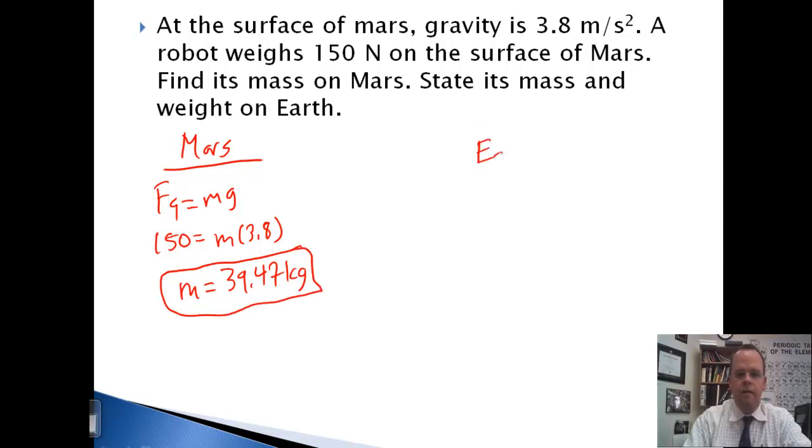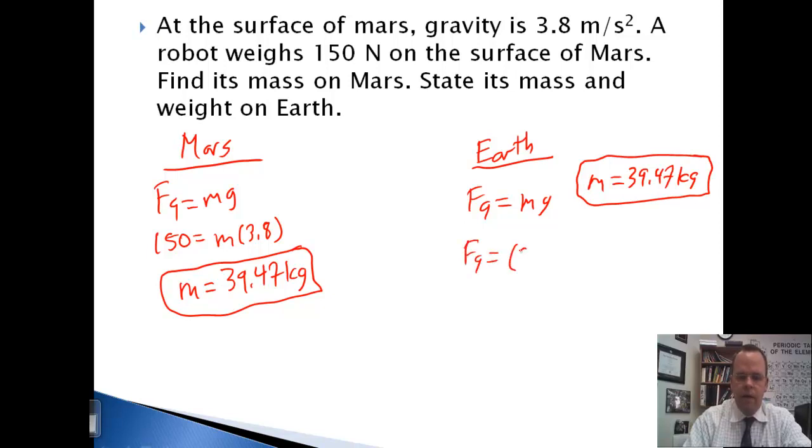On the Earth, F of G equals MG. The mass is still 39.47 kilograms. It does not change. So the weight would be 39.47 times 9.81. It comes out to 387.2 newtons.